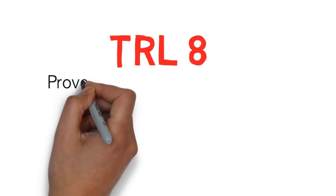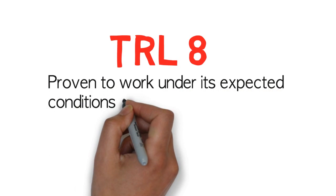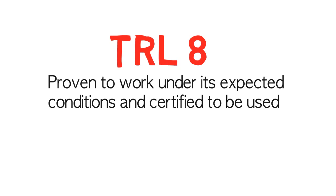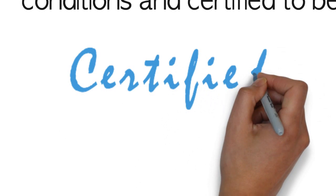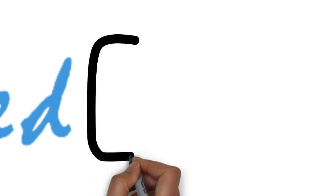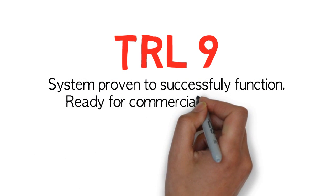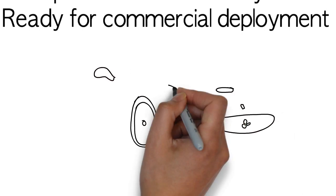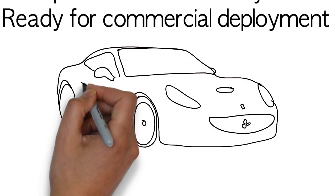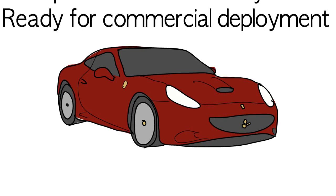TRL 8: Proven to work under its expected conditions and certified to be used. TRL 9: The system has successfully proven to function and is ready for commercial deployment. The tyre has been certified for road use and tested through a full life cycle to ensure it is safe.